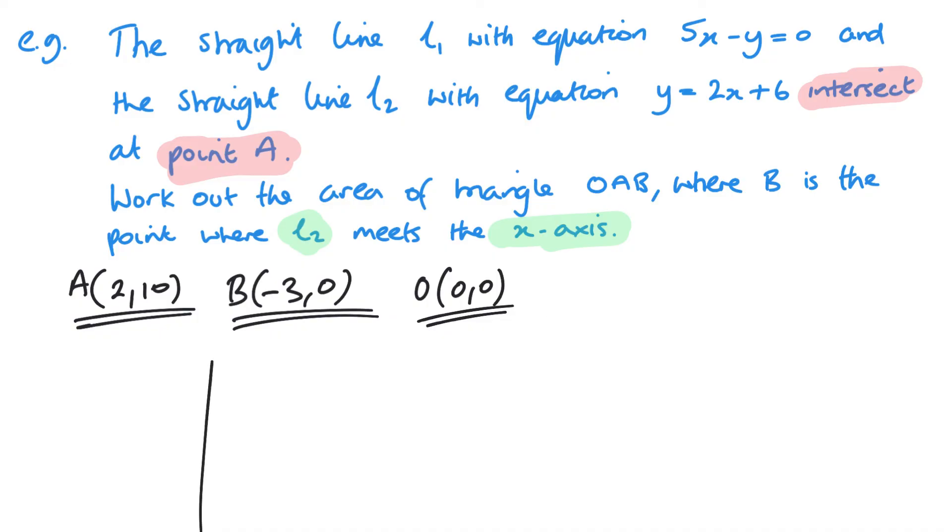It just helps you visualize it for the triangle. So we know origin is here. We know B is minus 3, it's over here. And we know A is 2, 10. So let's go up there somewhere. So it's a quick sketch. This is my triangle.